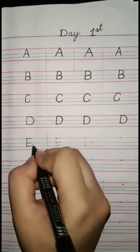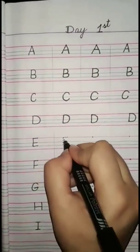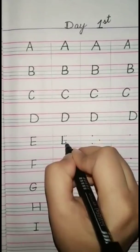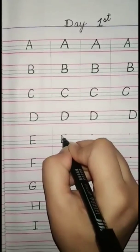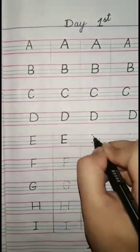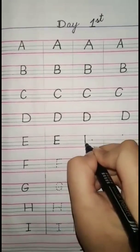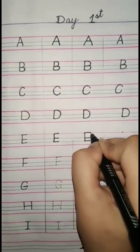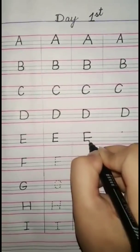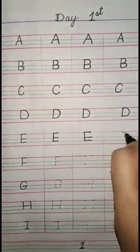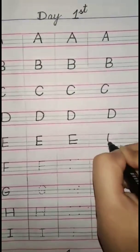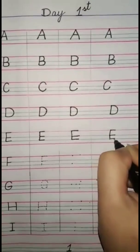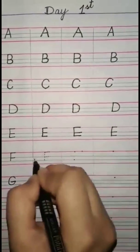Next step is E. We write E on the first three lines. First step is tracing, second step is on three dots, and the third step is one dot. We write E on one dot. E — elephant, E — egg.